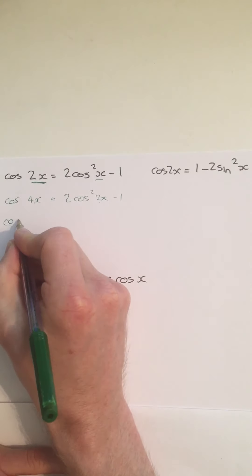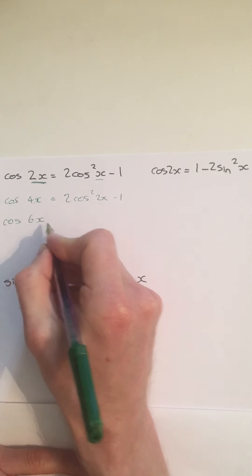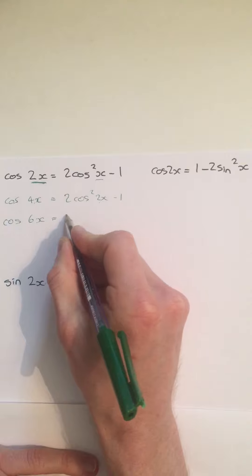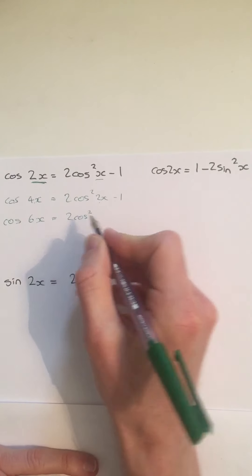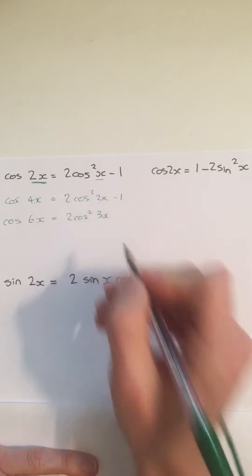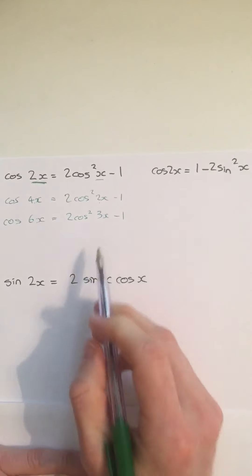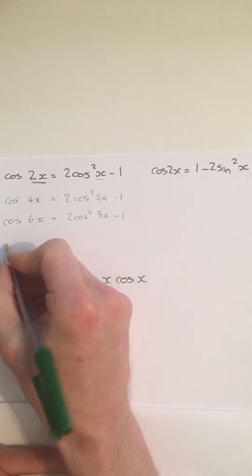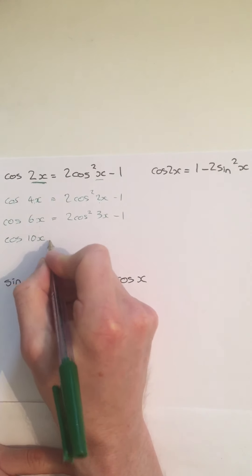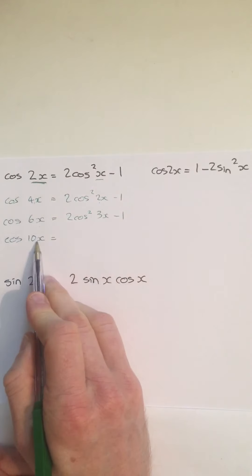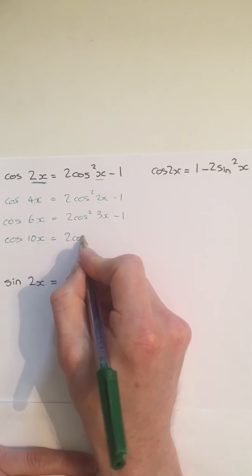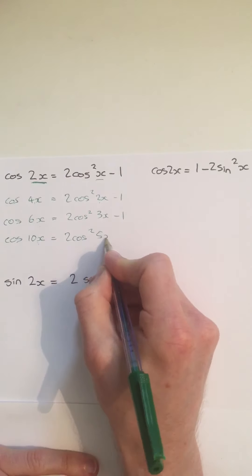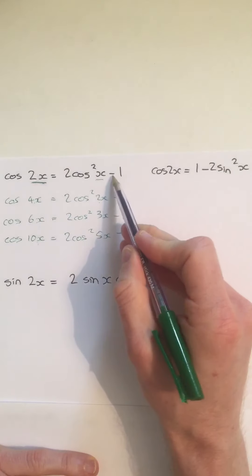Similarly, I could times both of those by 3. So I get cos 6x, which would be equal to 2 cos squared 3x minus 1. I could decide to times both of them by 5. I could say cos 10x would be equal to 2 cos squared 5x minus 1.